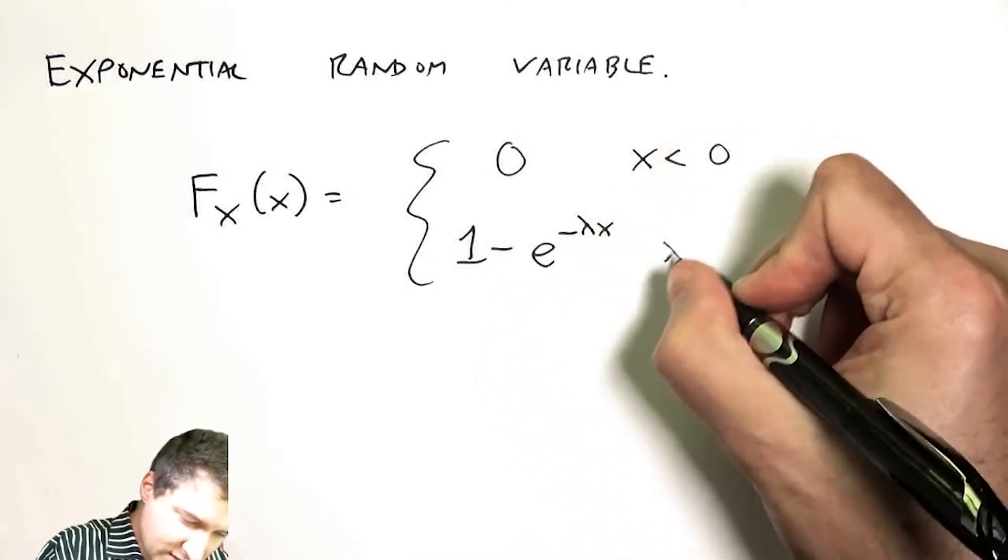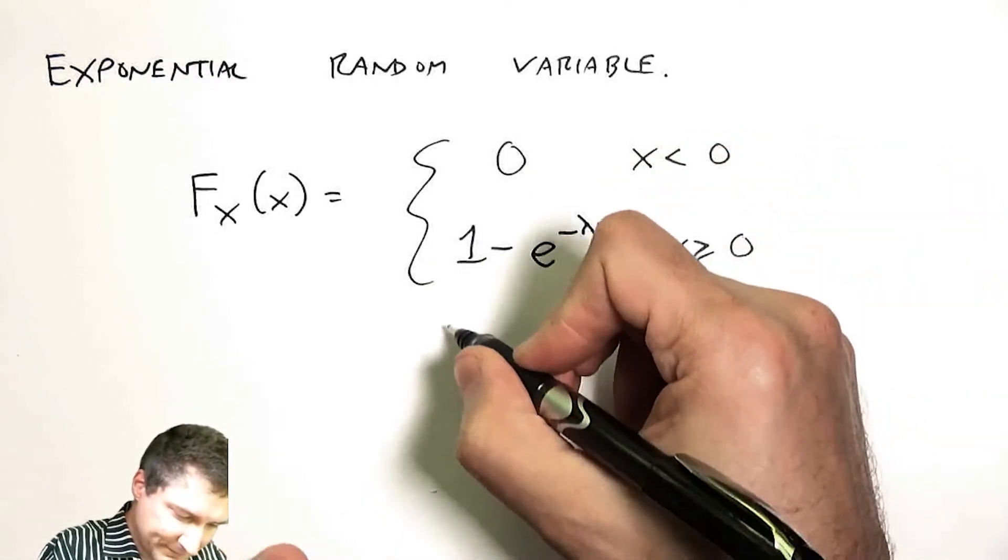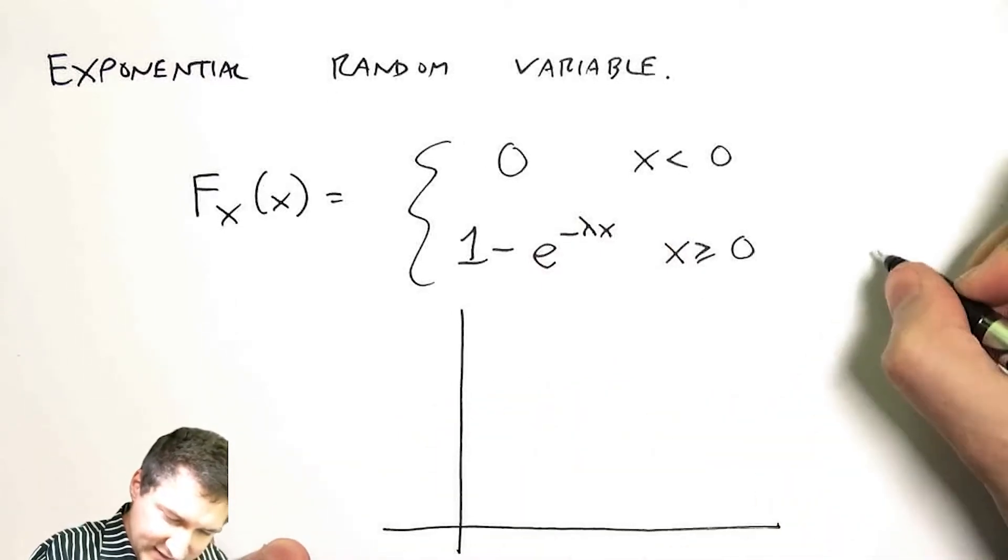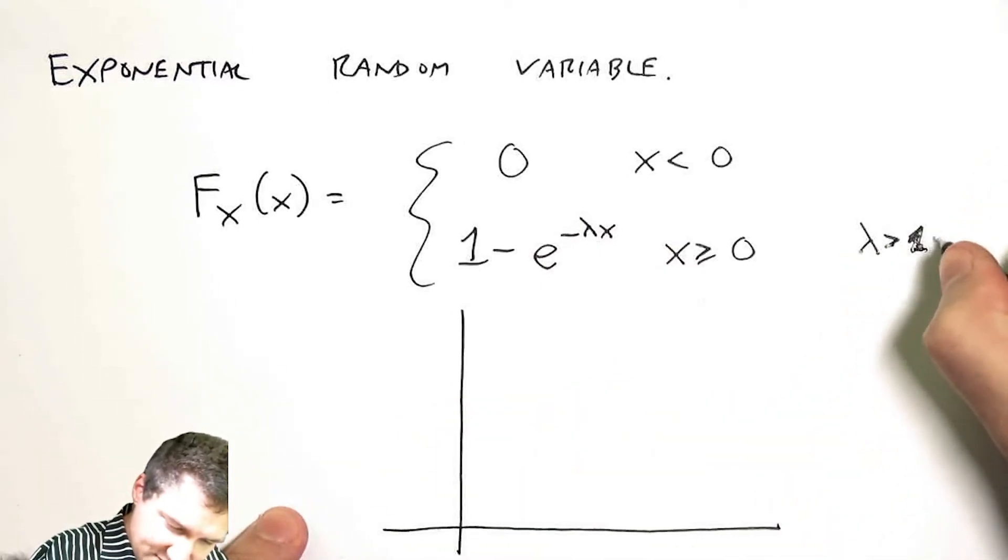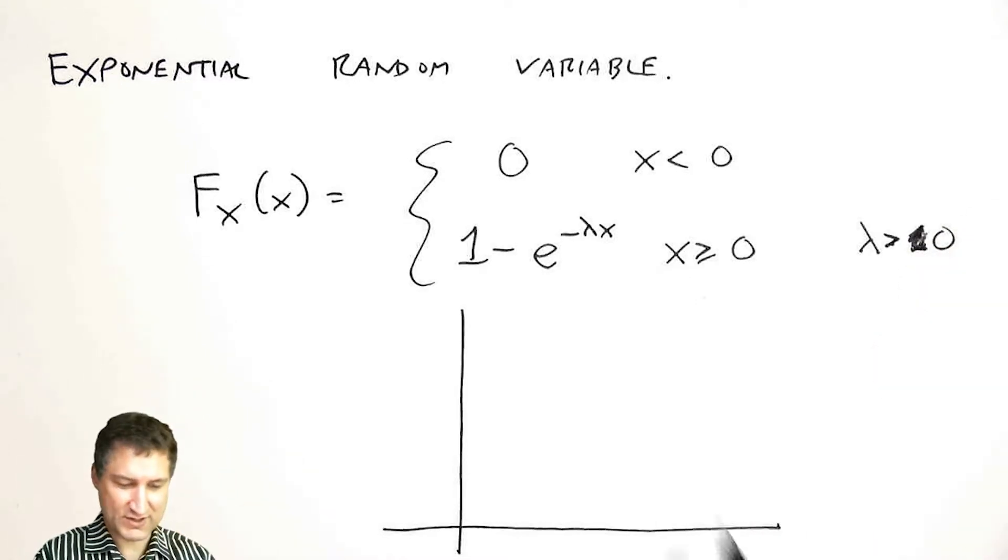I can plot what that looks like. Let me just make a note that this lambda parameter has to be positive, so I'm always dealing with something that's kind of decaying as time goes on.